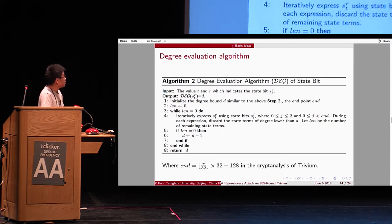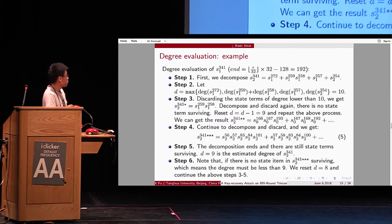And then, a degree evaluation algorithm. So, we give an example to explain this. Suppose we evaluate the state bits. So, we first decompose like this. And we let d equal to the maximum of state terms. It is 10 here. So, we're discarding the state terms of degree lower than 10. So, only those terms. These terms are left.